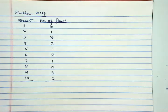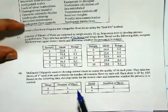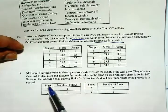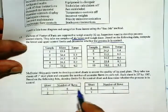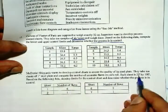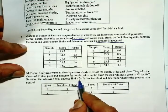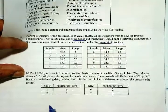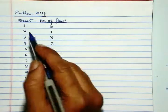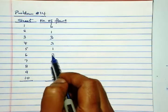Next is problem number 14, and here we are given sample data about the number of flaws in one inch thick steel plate. There are ten steel plates, and from each steel plate we have the number of flaws.